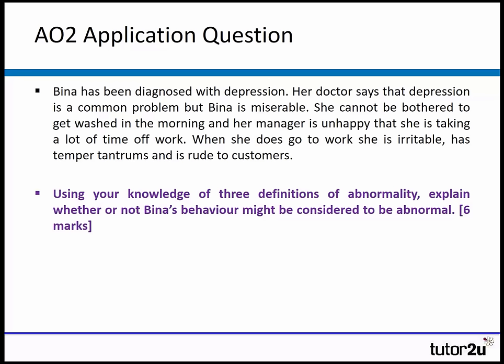The question is: using your knowledge of these three definitions of abnormality, explain whether or not Bina's behaviour might be considered abnormal — six marks. I always recommend that you must apply to the stem, in this case Bina and the definitions of abnormality, and highlight extracts from the stem that you're going to quote in your answer.